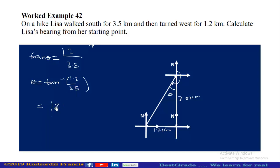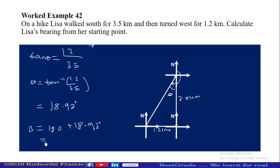So theta equals the tan inverse of 1.2 over 3.5, which gives us 18.92 degrees. Hence the bearing will be equal to 180 + 18.92 degrees, and this will be equal to 192.92 degrees, to two decimal places.